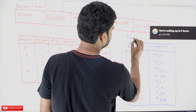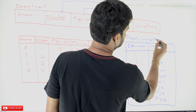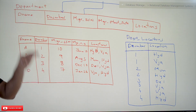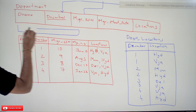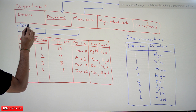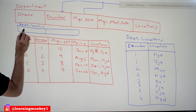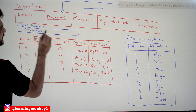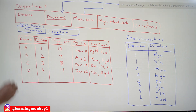We name this table DEPT_locations, which stands for department locations. This is our new table that has been formed in the database schema and is represented there. The columns of this table are D_number and locations. Now the question is: what is the primary key for this table?